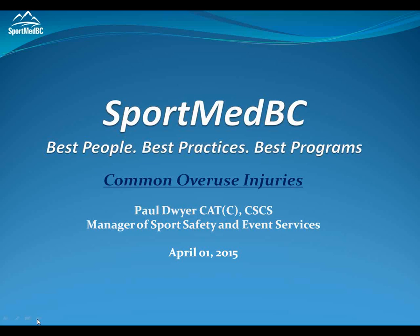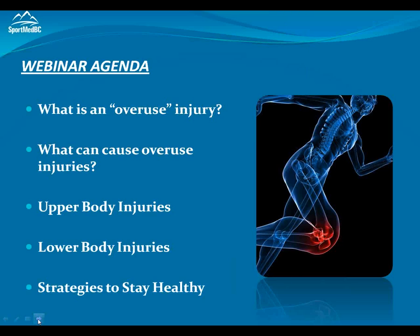Often when we have an acute injury, we understand things a lot better — it's a real traumatic force and so it makes a lot of sense. So tonight, hopefully, we can just shed a little light on overuse injuries. We'll look at what an overuse injury is, what are some of the things that can actually cause overuse injuries to occur. I'm going to cover a few of the blanket upper body and lower body injuries that occur quite often, and then leave you with just a few strategies of how we can stay healthy and avoid these overuse injuries.